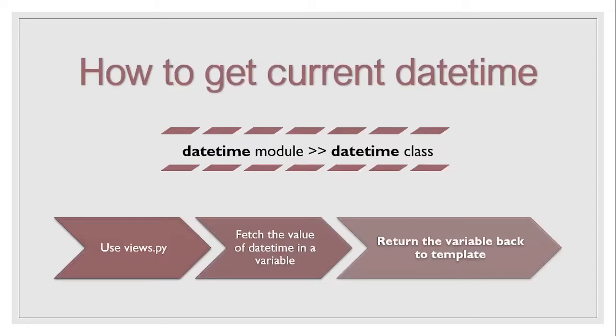The first topic is how we can get the current datetime value in Django. For all topics, we are going to use a simple approach: we'll use the datetime module, and within that module we are going to use the datetime class.